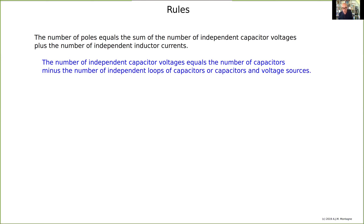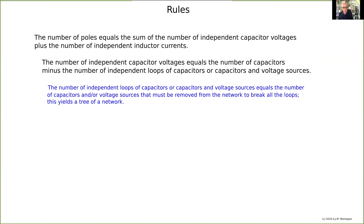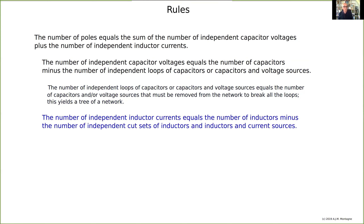Now what is an independent loop? The number of independent loops of capacitors or capacitors and voltage sources equals the number of capacitors and/or voltage sources that must be removed from the network to break all the loops. That gives you what you call the tree of a network — a graph in which all the nodes are connected by branches but there are no loops.